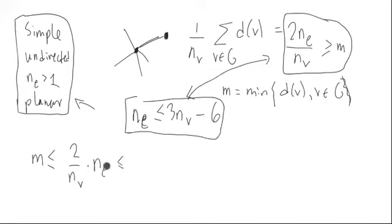Let's use an inequality right here. NE is less than, we can kind of keep this part right here, but replace NE with something here, which is 3NV minus 6. Multiply this through.